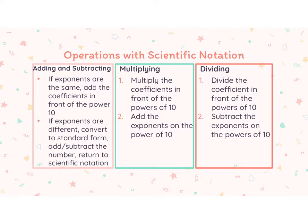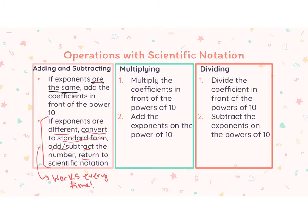When we are adding and subtracting numbers in scientific notation, if the exponents are the same, we can simply add the coefficients in front of the power of 10 and keep the power of 10 the same. If the exponents are different, we have to convert them to standard form first, then add or subtract, and then turn it back into scientific notation. This method works every time, so some people just like to do this every time anyway. I will show you both methods and you can make a choice. If the exponents are different, you always have to convert them to standard form first.